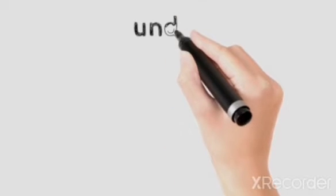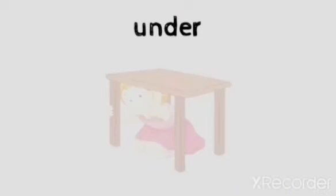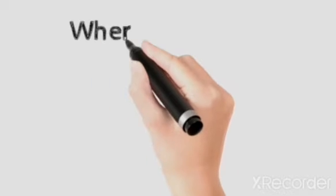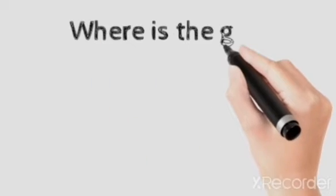Fourth preposition: 'under'. There is a girl and a table. Where is the girl?